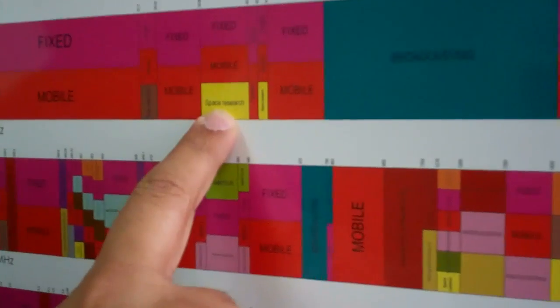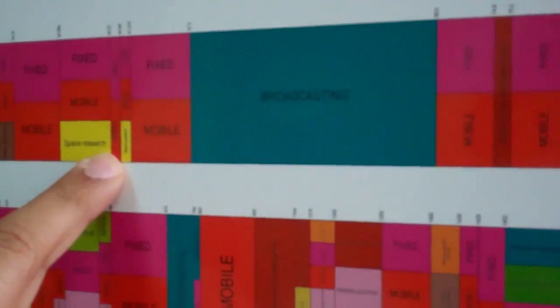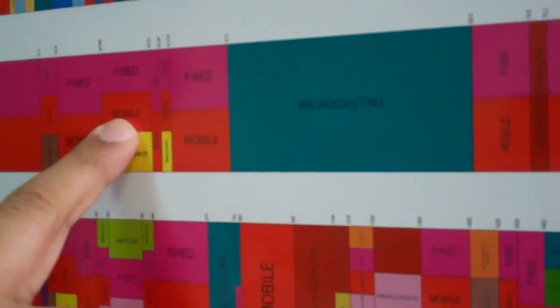Like for example here, the space research is on secondary while in the same range, the fixed and the mobile radio service are on a primary basis. Now, let us correlate this chart to our everyday use.